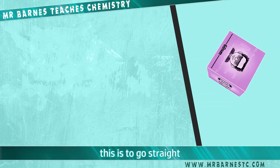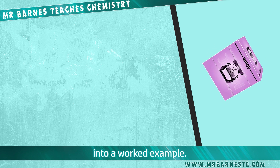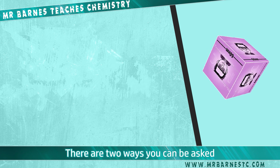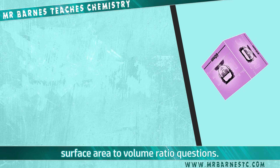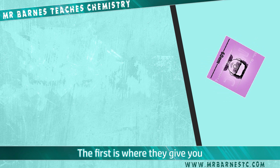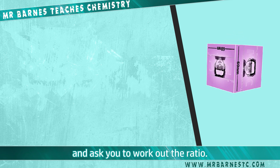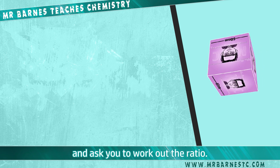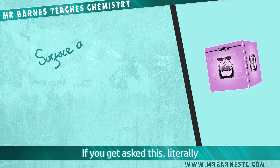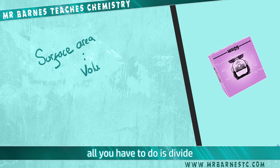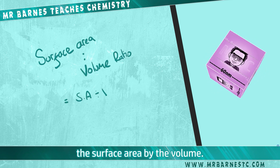The best way to look at this is to go straight into a worked example. There are two ways you can be asked surface area to volume ratio questions. The first is where they give you the surface area and the volume and ask you to work out the ratio. If you get asked this, literally all you have to do is divide the surface area by the volume.